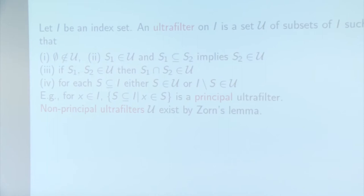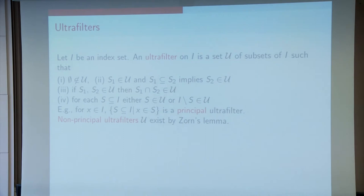One has an index set i, which very often might be the positive integers, and an ultrafilter on this set is a family of subsets which doesn't contain the empty set, which together with any set contains all bigger sets, which is closed with respect to taking intersections of two sets, and has the crucial property that if I have a set then either it or its complement is in this family.